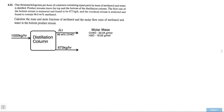Today we're going to be doing a classic mass balance problem. The problem reads: 1,000 kilograms per hour of a mixture containing equal parts by mass of methanol and water is distilled. Two product streams leave the top and the bottom of the distillation column. The flow rate of the bottom stream is measured and found to be 673 kilograms per hour, and the overhead stream is analyzed and found to contain 96 weight percent methanol. Calculate the mass and mole fractions of methanol and the molar flow rate of methanol and water in the bottom product stream.